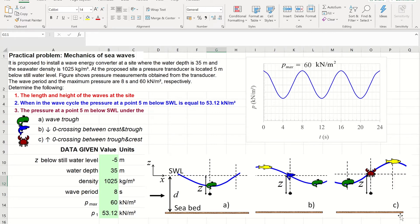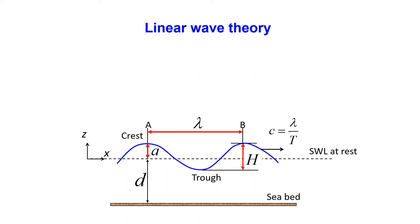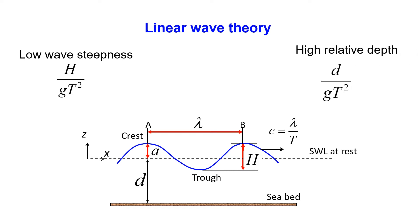Now let's consider the methods we will use to solve this problem. We use equations based on linear wave theory. Linear wave theory applies to conditions of low wave steepness and high relative depth. Wave steepness is defined as wave height divided by gravity and divided by wave period squared. Relative depth is defined as water depth divided by gravity and divided by wave period squared. Most problems of practical interest do not fall within the linear wave theory regime. However, linear wave theory can give results which are good enough when used outside its strict region of applicability. In addition, linear wave theory is the simplest theory and is the best starting point to develop good understanding of wave mechanics.